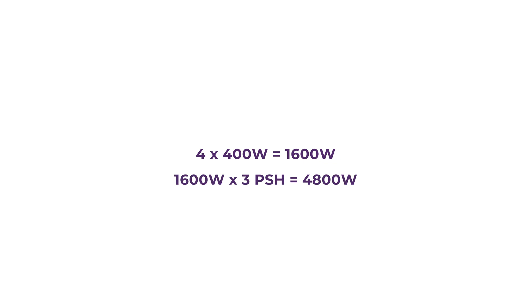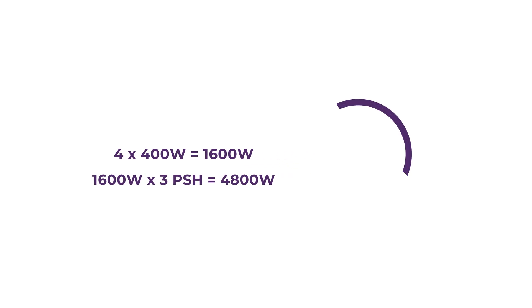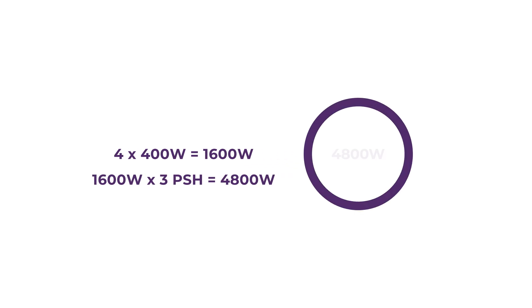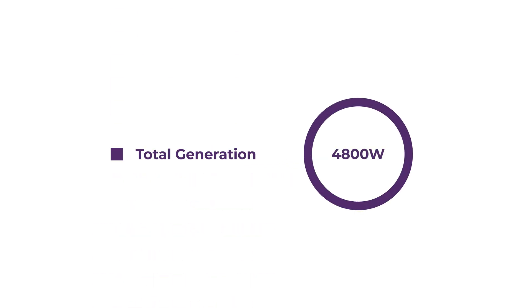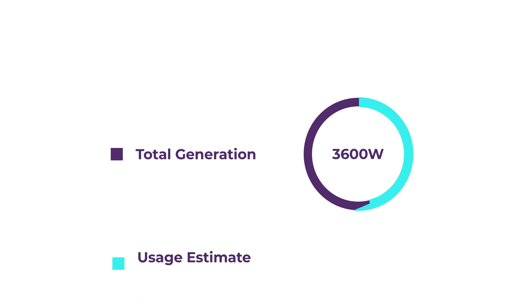With 4 × 400 watt solar panels, you can generate about 4,800 watt hours with 3 peak sun hours. With a usage estimate of 3,600 watt hours, that leaves about 25% of the total generation for losses and wiggle room, which is what we recommend.